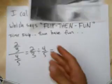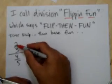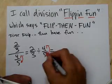What about division? Oh! Man! Get that out of there! I call division flip and fun, which says flip then fun. Flip then fun. So when you see division two-thirds divided by four-fifths, you just flip the second one, or the bottom one, and multiply. So when they say division, you say, no, man, I'm going to flip and multiply.